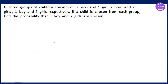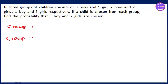Number six. Three groups of children. There are two groups — actually, there are three groups. Now, you can see group one, group two, group three.